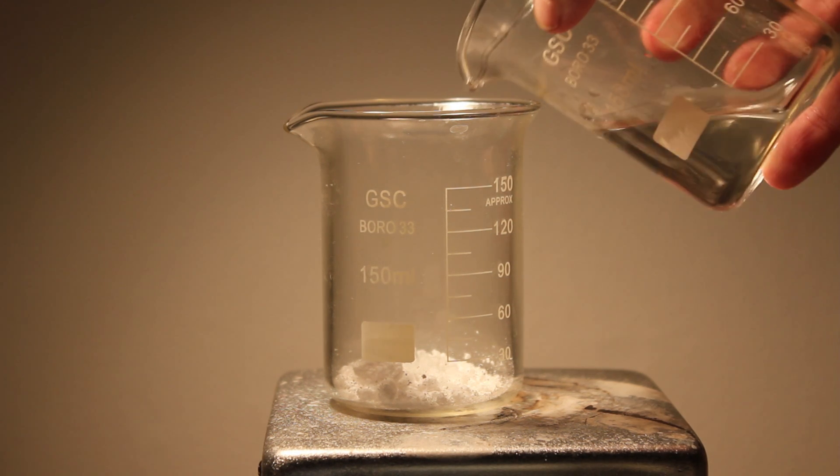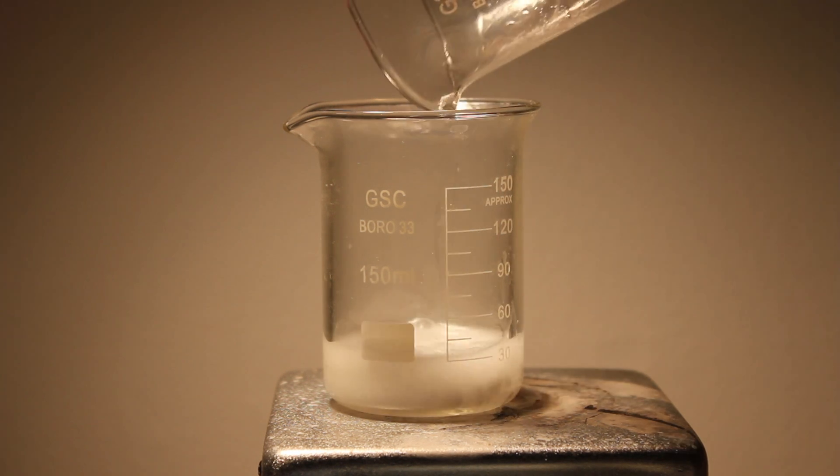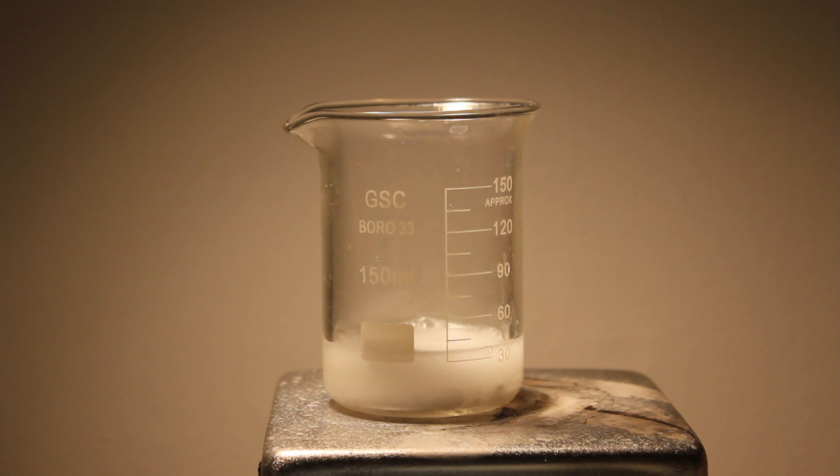First, 3.6 grams of acetylsalicylic acid are added to a beaker. Then, 20 milliliters of water are added.